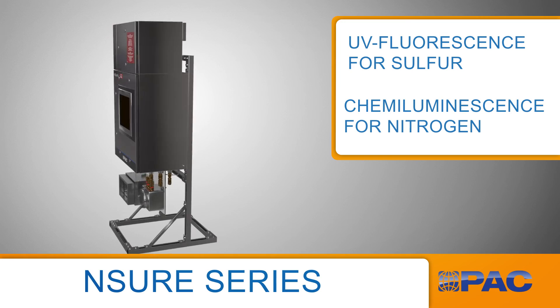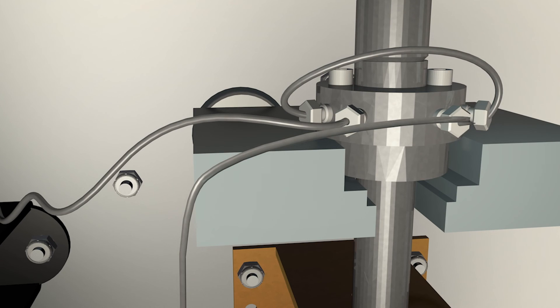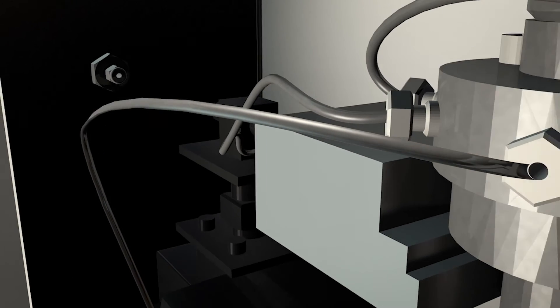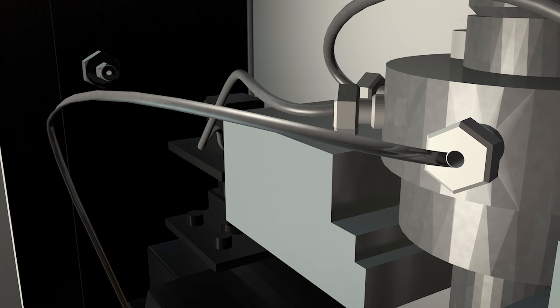The first step is the introduction of the sample. Ensure utilizes a direct injection system, which means the sample is completely combusted during every measurement cycle. The injection valve directly delivers a microliter of sample to the furnace for analysis.